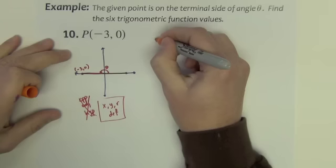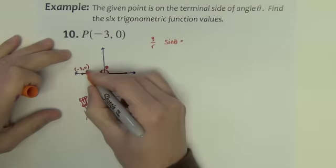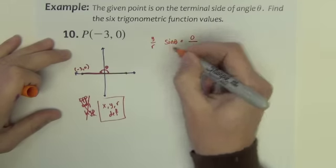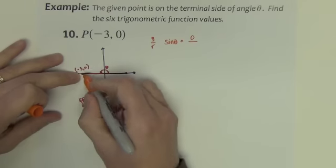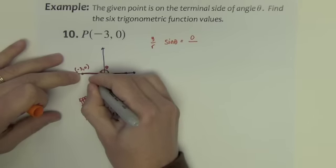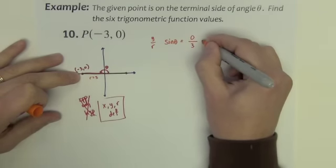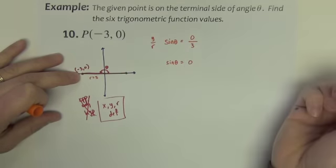Sine of theta. Sine is the y over r. So the y value of this point is 0. The r value is the distance from the origin point to the point. So the r value is 3. So the sine of theta is 0.